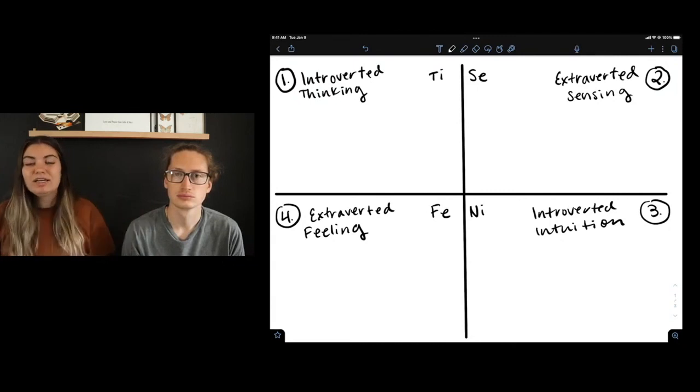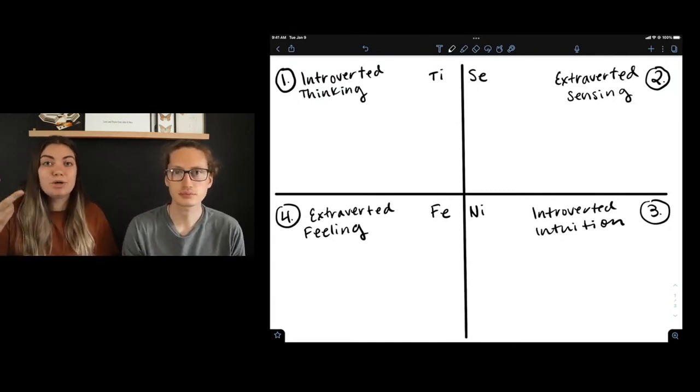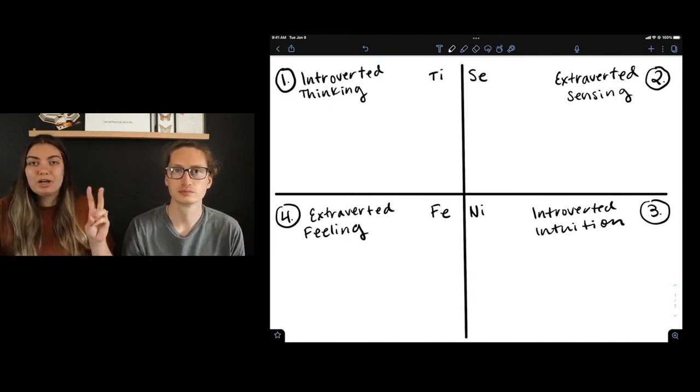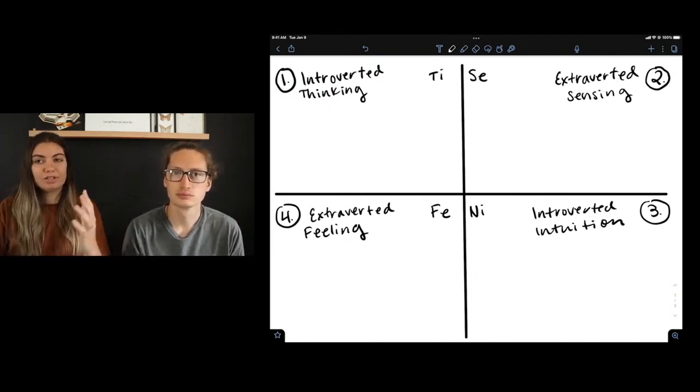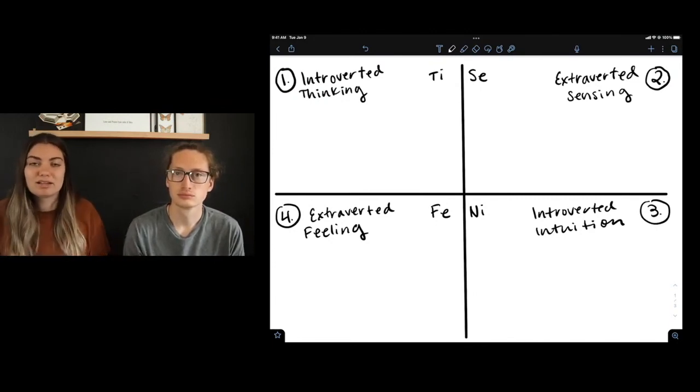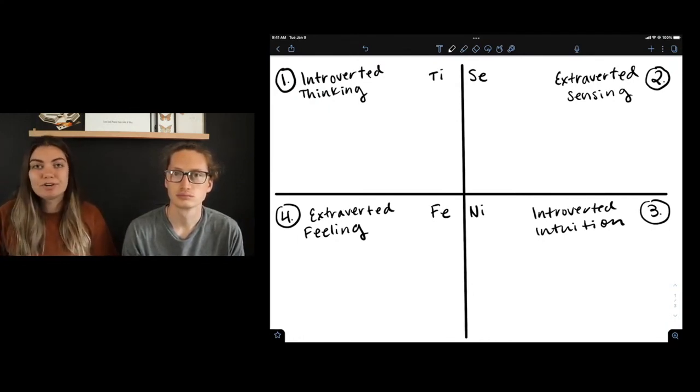The fourth function is extroverted feeling. So extroverted meaning external, and then feeling meaning like the feelings that could be the emotions. How do we all feel about talking about politics? Is that allowed? Or is it not allowed? So it can create norms, like how are we feeling about this? It can create etiquette, like we're all feeling like it's not good to be to have your elbows on the table or something like that. It's not limited to that, but it is oriented on the external feelings of the group, and then because it's ISTP's fourth function, sometimes it's underused, especially like if you're in your twenties.